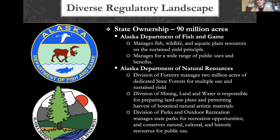The state of Alaska has overlapping resources and management across the state, particularly for species like grouse, ptarmigan, and caribou that migrate across federal and state lands. Fish and Game manages fish, wildlife, and aquatic plant resources on a sustainable yield principle. They work with the Board of Game and Board of Fish, who allocate the amount of resources to be harvested. Regulations are available online and in harvest booklets, managing for a wide range of public uses.